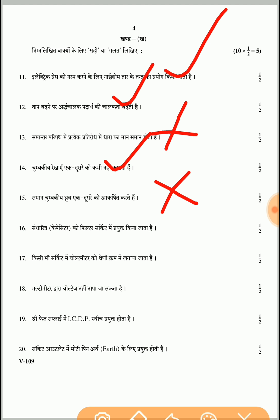Question 16: An electrolytic capacitor is used in a filter circuit — absolutely correct. Question 17: A voltmeter is connected in series in any circuit — absolutely wrong, because a voltmeter is always connected in parallel and an ammeter is always connected in series. Question 18: Voltage cannot be measured by a multimeter — absolutely wrong, because voltage can be measured by a multimeter.